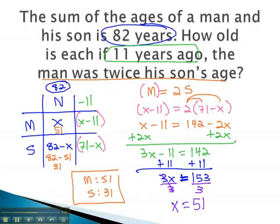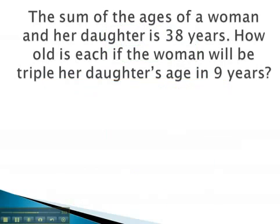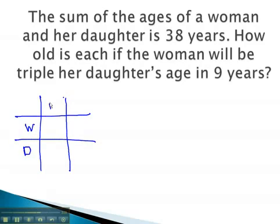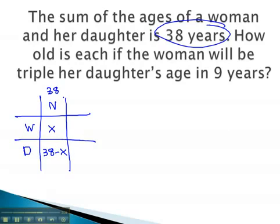Let's try another example. In this problem, we see that we're comparing the ages of a woman and her daughter. Right now, the sum is 38. We make the woman x, and the daughter the total, or 38 minus x. Here the change in time is 9 years — we're adding 9 years into the future. This gives us x plus 9 and 47 minus x.